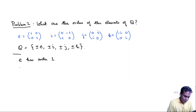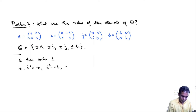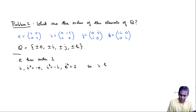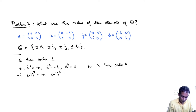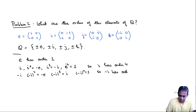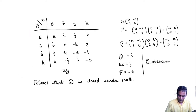Now let's look at the element i. We have i² = -e, i³ = -i, and i⁴ = e. So i has order 4. For -i: (-i)² = -e, (-i)³ = i, (-i)⁴ = e, so -i also has order 4. The same reasoning holds for j and k, since j² = -e and k² = -e as computed earlier. So ±j and ±k all have order 4.